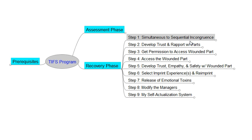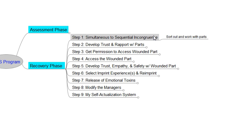Once we move them out into the room and we have all the parts involved with a certain process out there, then we can have sequential incongruence. It's still incongruent, but at least it's sequential, so that we have it sorted out and we can work with the parts that are involved. Incongruence, in other words, is conflict, and what we want to shoot for is a lack of conflict — harmony and integration.